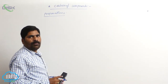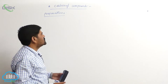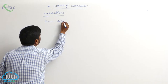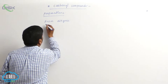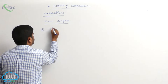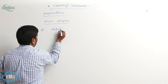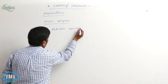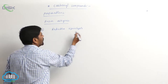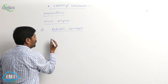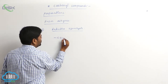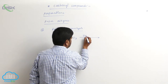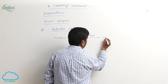The third preparative method of carbonyl compounds is from alkynes. The first method is reductive ozonolysis. In reductive ozonolysis, a C≡C triple bond reacts with O₃ in the presence of zinc and water to form a dicarbonyl compound.